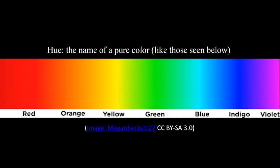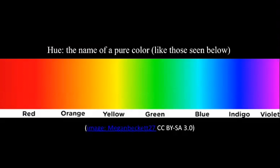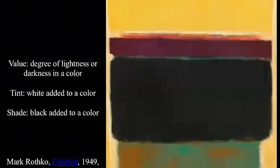When we're talking about green, we're talking about that pure green that you would find right there in the center of this color spectrum. So that name of the pure color is a hue. When we take that pure color and we add white or black to it, we're creating a value. So that degree of lightness or darkness in a color is actually the color value.